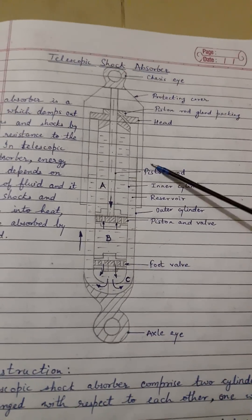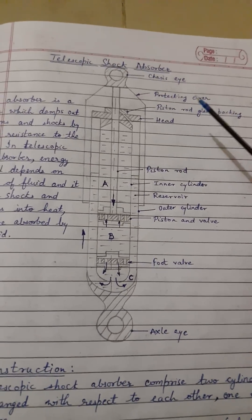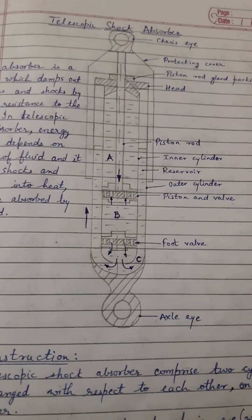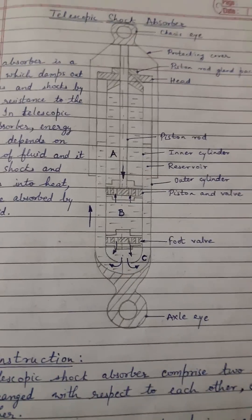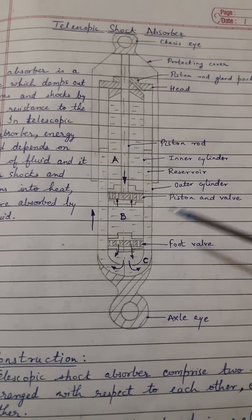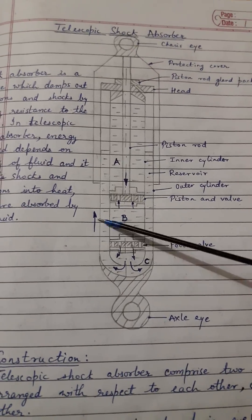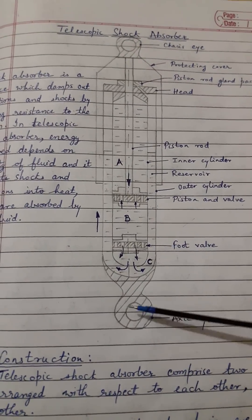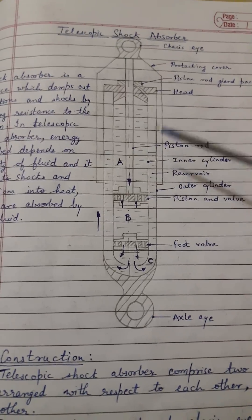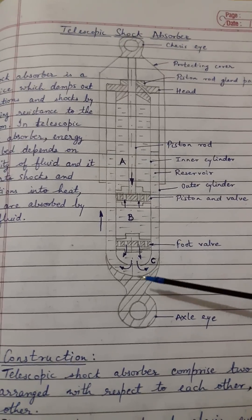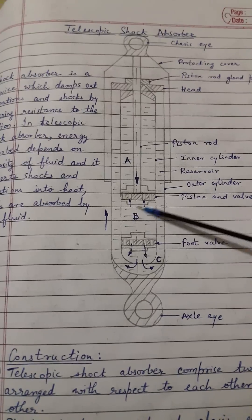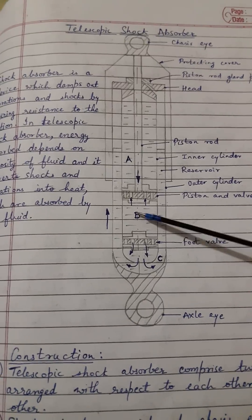After studying the construction, we'll now study the working of the telescopic shock absorber. Whenever there is a bump on the road, the bottom eye moves upward, and because of this movement the pressure in chamber B increases.